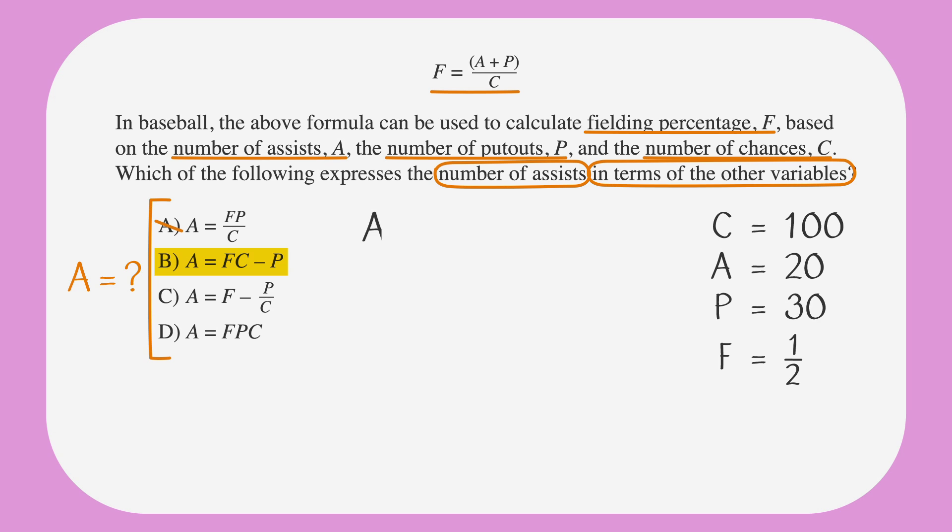Now on to B: A equals FC minus P. Let's plug our numbers in and see if it works. A equals 20, F equals one half, C equals 100, and P equals 30. Let's do a bit of math to find out if that works. Does 20 equal 50 minus 30? Yes it does. Answer choice B is correct.